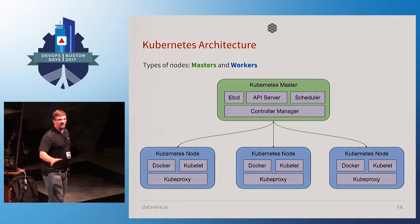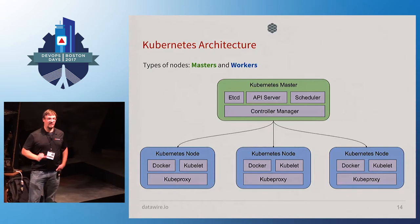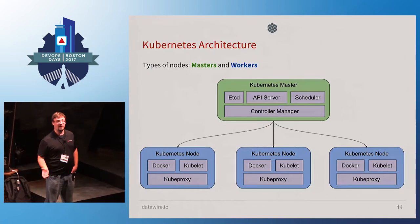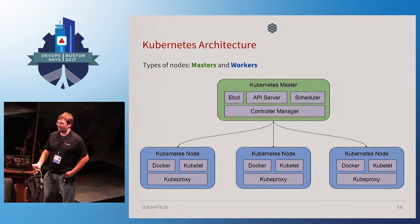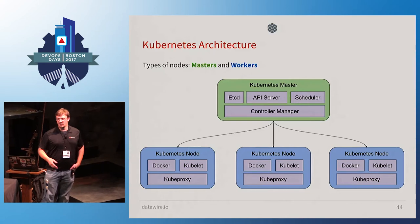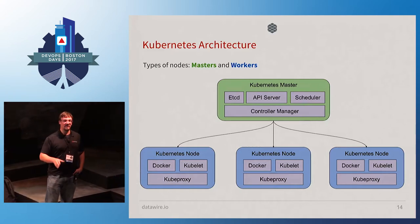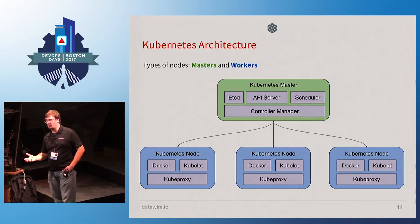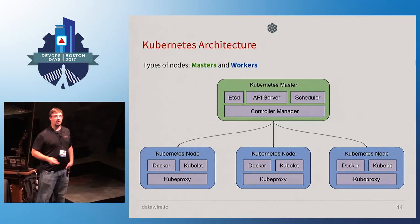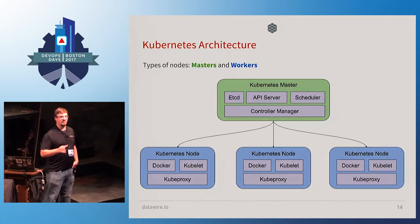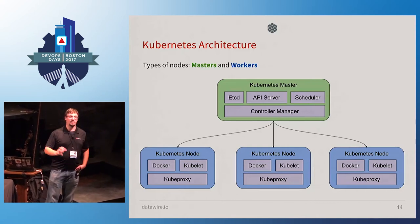The Kubernetes architecture is pretty simple. You have one or more masters running for high availability, followed by one or more nodes that actually take workloads — the nodes are what run the containers. On the master you have an API server, which is what you talk to with the kubectl command, a scheduler and controller manager, responsible for putting containers on nodes and managing their state. On the nodes: Docker is the actual runtime, Kubelet is the orchestration engine for talking to Docker, and kube-proxy enables communication between the nodes.